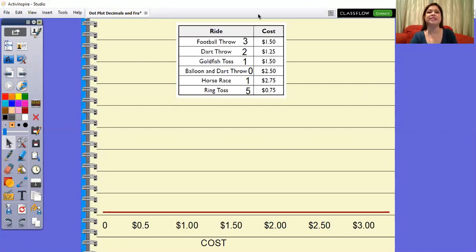And then we can go on. So based on this, it says that during the first few minutes, three people bought tickets that cost $1.50. Two people bought tickets that cost $1.25. One person bought a ticket that cost $1.50. No one bought tickets that cost $2.50. One person bought a ticket that cost $2.75, and five people bought tickets for the ring toss. And those were 75 cents.